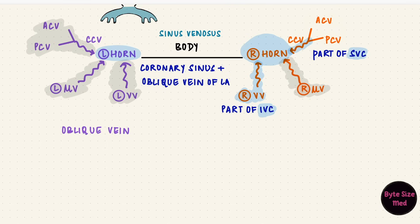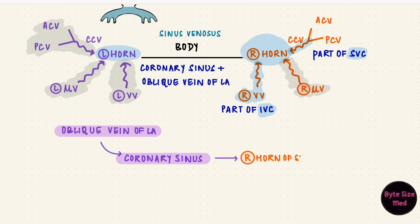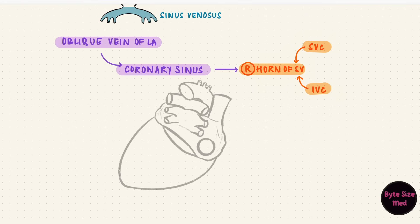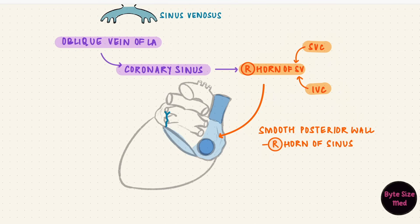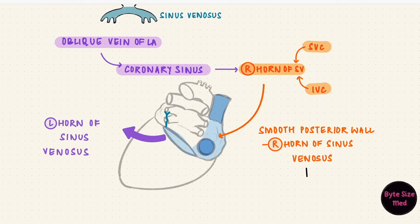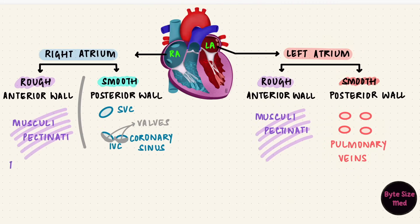The oblique vein of the left atrium leads into the coronary sinus, and these are from the left horn of the sinus venosus. It drains into the enlarging right horn of the sinus venosus, which receives the superior and inferior vena cava. On the back of a completely developed heart, we have the oblique vein of the left atrium, the coronary sinus, and the right atrium with the superior and inferior vena cava draining into it. The smooth posterior wall of the right atrium is formed by the absorption of the right horn of the sinus venosus, and the left horn remains as the coronary sinus and the oblique vein of the left atrium. This portion of the right atrium is called the sinus venerum, and it receives the openings of the veins.